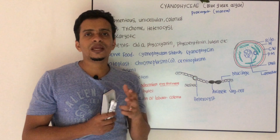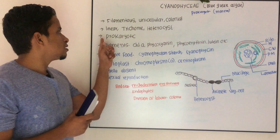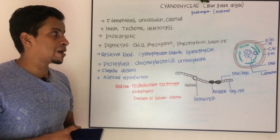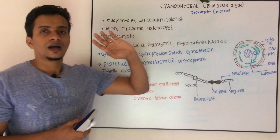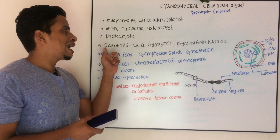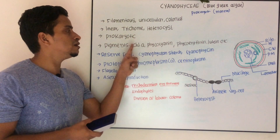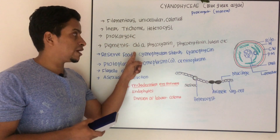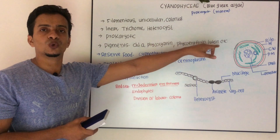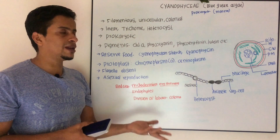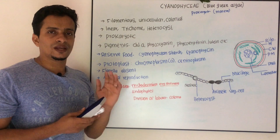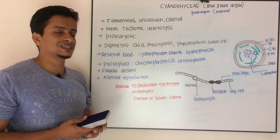They are typically prokaryotic in organization, meaning a nuclear membrane is absent and membrane-bound cell organelles are also absent. When it comes to pigments, you can see Chlorophyll A. Major pigments include phycocyanin, phycoerythrin, lutein, allophycocyanin, etc. The reserve food material is cyanophycin starch and cyanophycin.